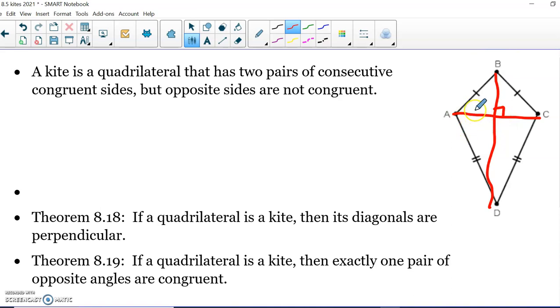All right. We also know that one diagonal bisects the other diagonal. You can see this diagonal is bisected. And then the last thing we talked about, we said that we have one pair of congruent angles. They're called the non-vertex angles. This angle is congruent to this angle.